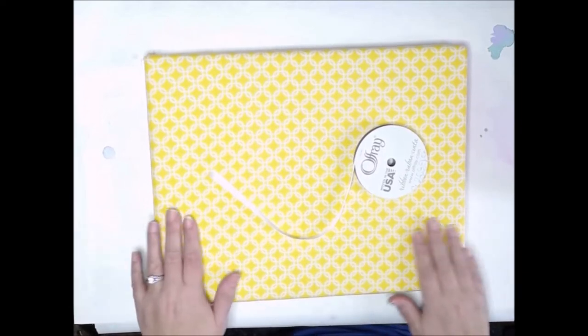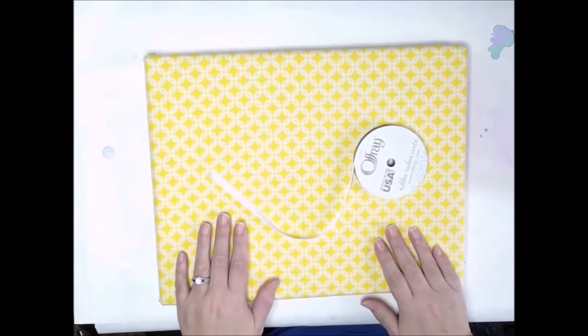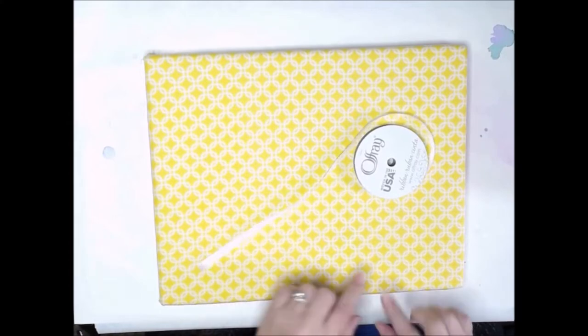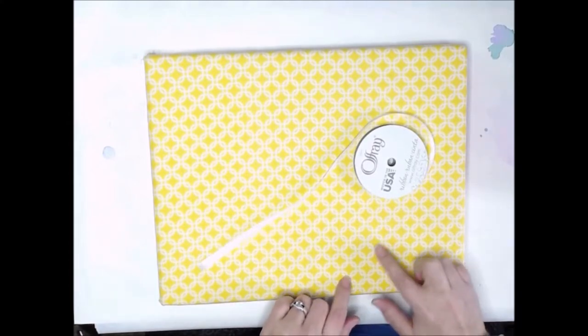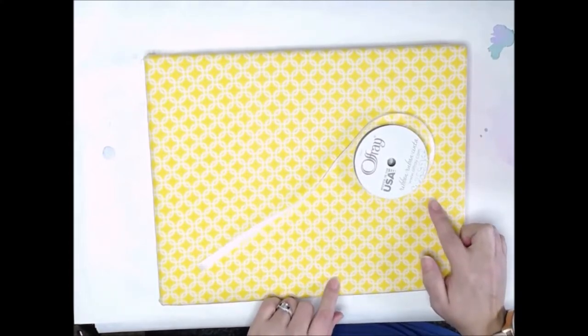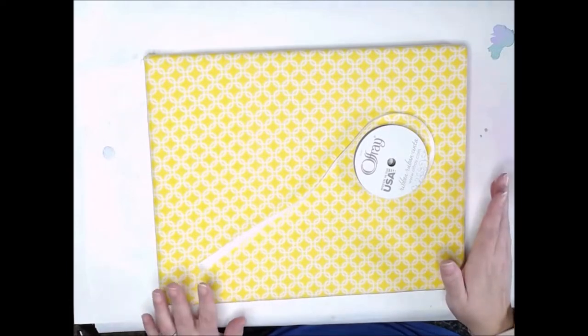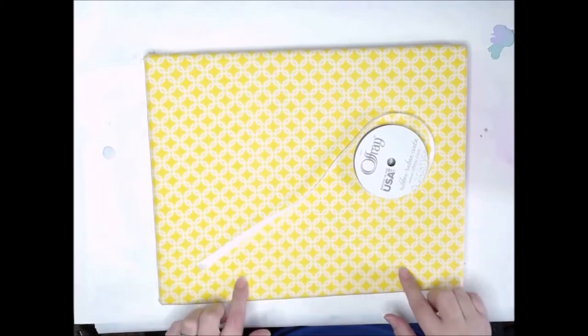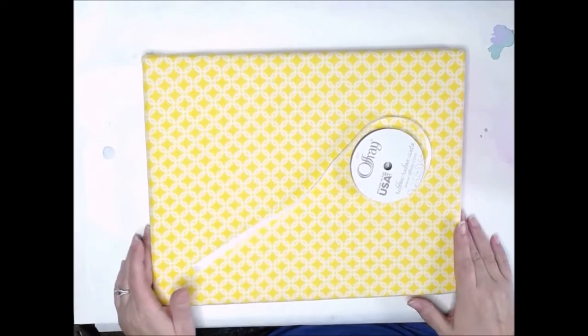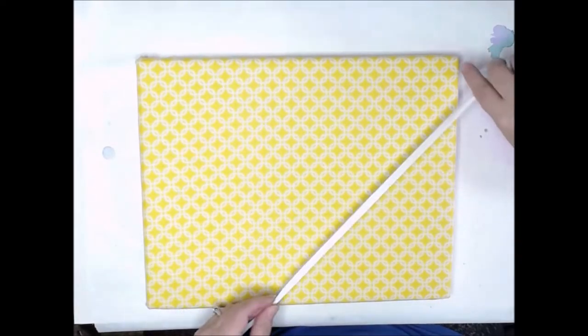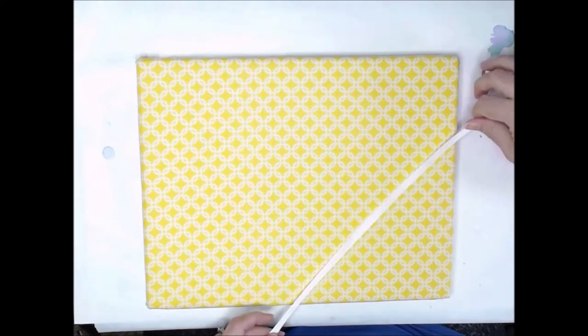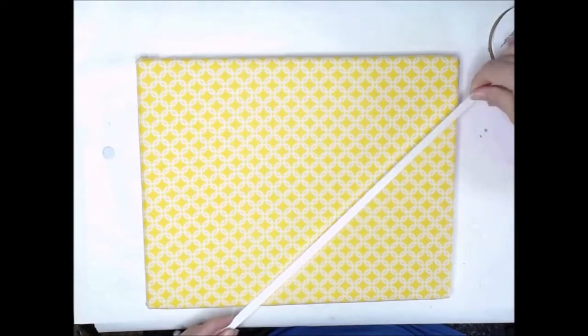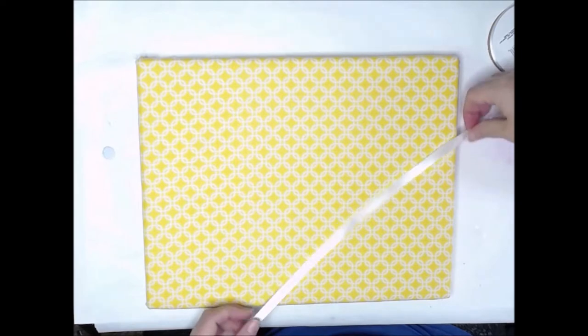Alright, and now that we have the fabric on over the batting, it is time to lay the ribbon out. And with this particular pattern, it makes it really easy to measure exactly where we want the ribbon to go, as well as make sure the angles are correct on all of it, because we do basically have a grid pattern here. So, what we want to do is just start laying the ribbon out. Make sure you have it the shiny side up.